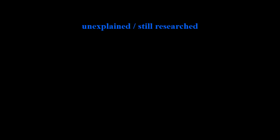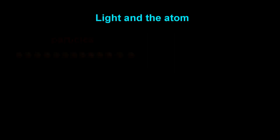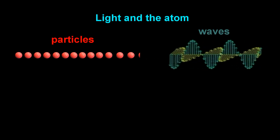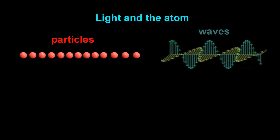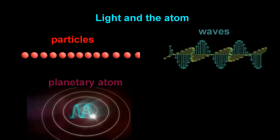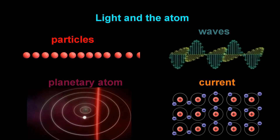Quantum theory is known to be incomplete. Here we provide a fresh approach to light and the atom that gives theorists a perspective they can integrate into their research. What if we took a new look at the particles and transverse wave models of light, as well as at the ubiquitous planetary atom with which we typically simulate phenomena such as quantum jump, ionization, and electricity?